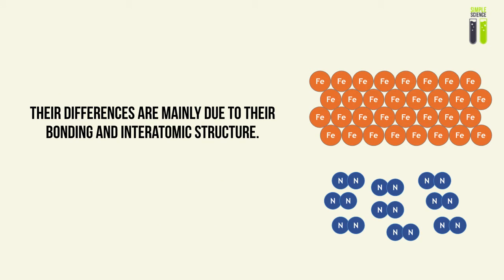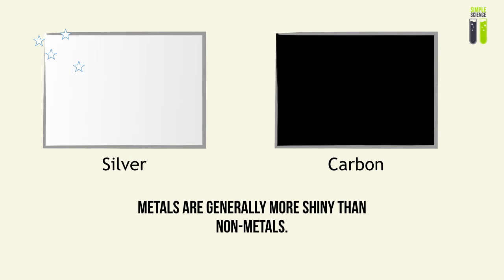You should know that the differences between metals and non-metals are mainly due to the bonding and inter-atomic or intermolecular structure. So let's get to our first property, and that is shine. Metals are generally more shiny than non-metals — if you compare silver and carbon, silver is obviously more shiny than carbon, and that goes for many other comparisons between metals and non-metals.